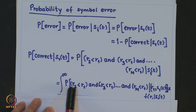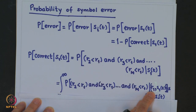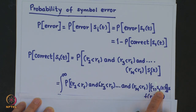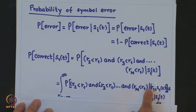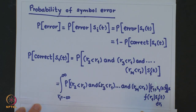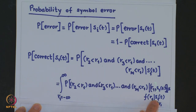For a given value of R_1, this condition must hold. We have transmitted S_1(t), and for a specific value of R_1, we compute the joint probability that all R_j < R_1 for j = 2 to M. Then R_1 varies from minus infinity to infinity, so we multiply this quantity by the conditional pdf of R_1 given S_1(t).